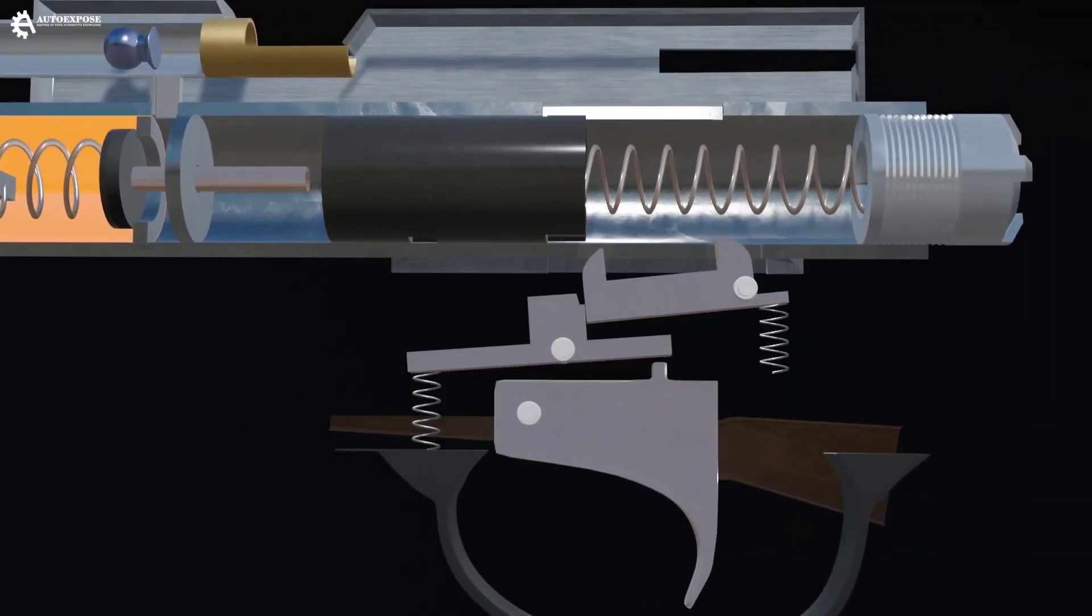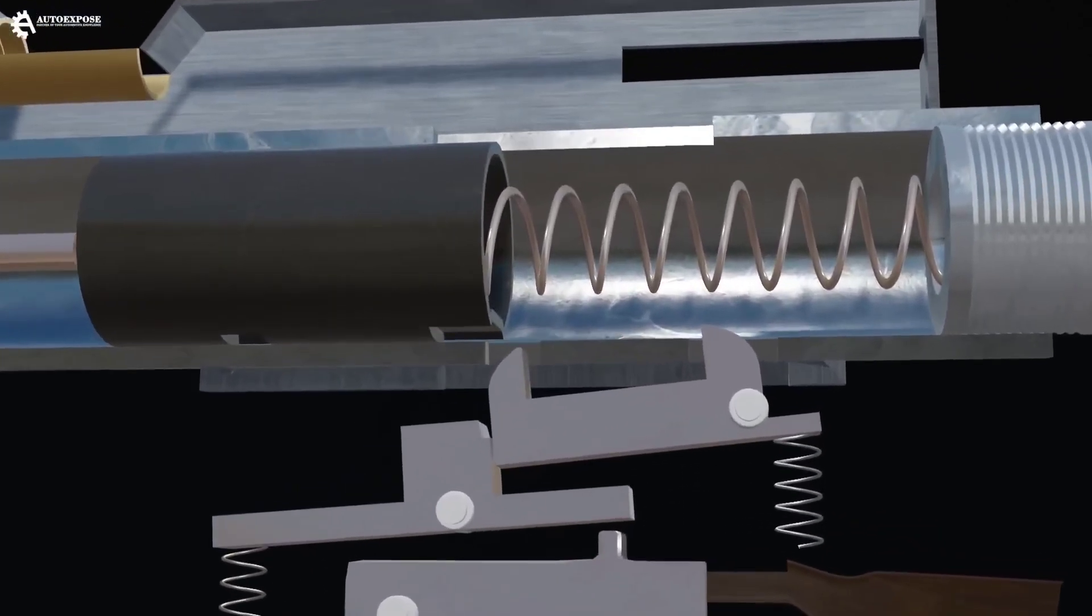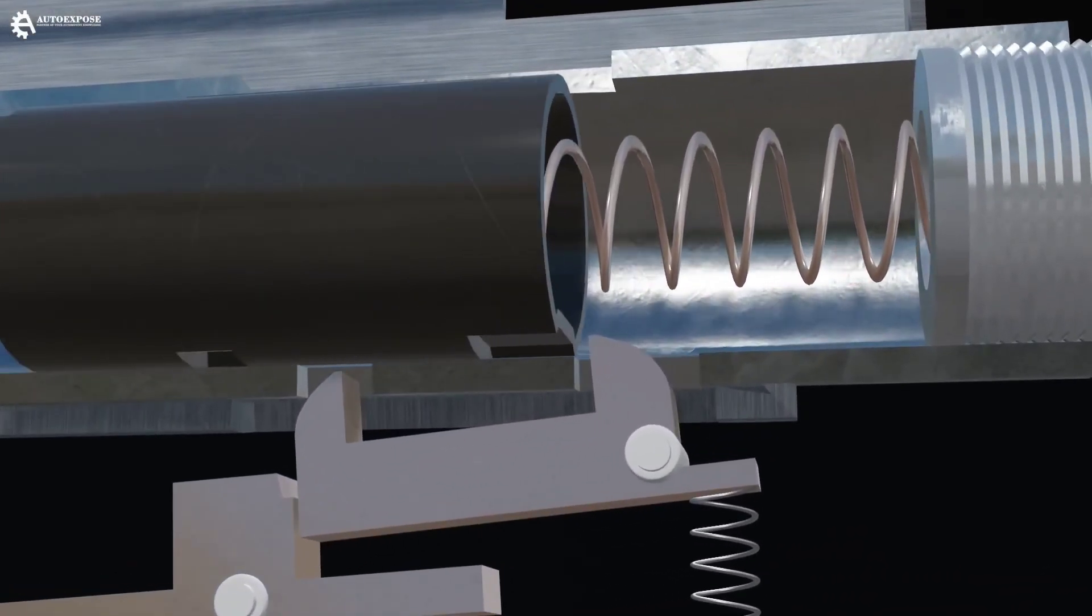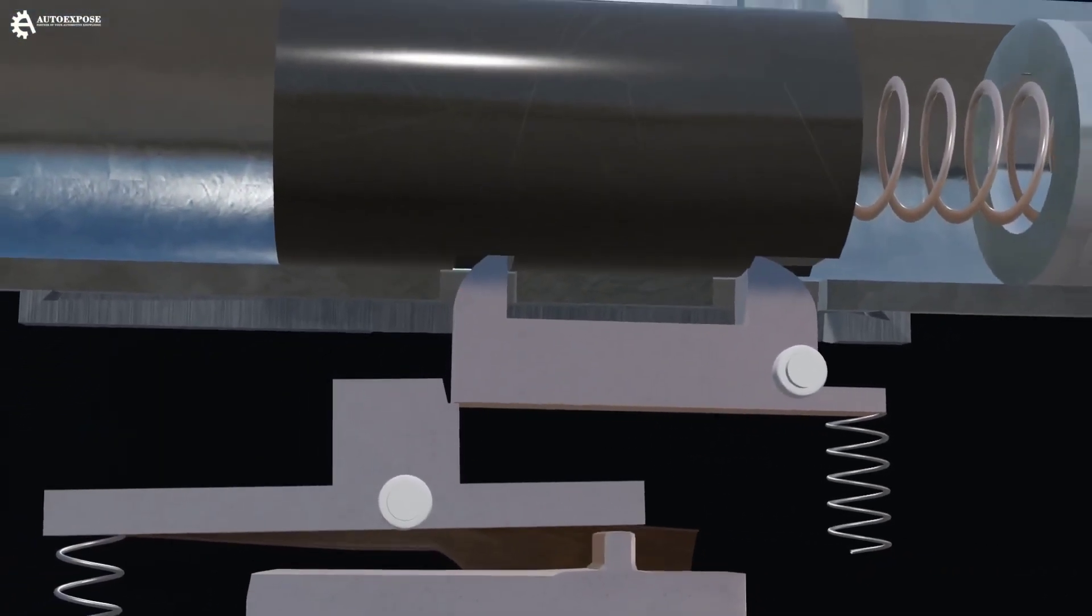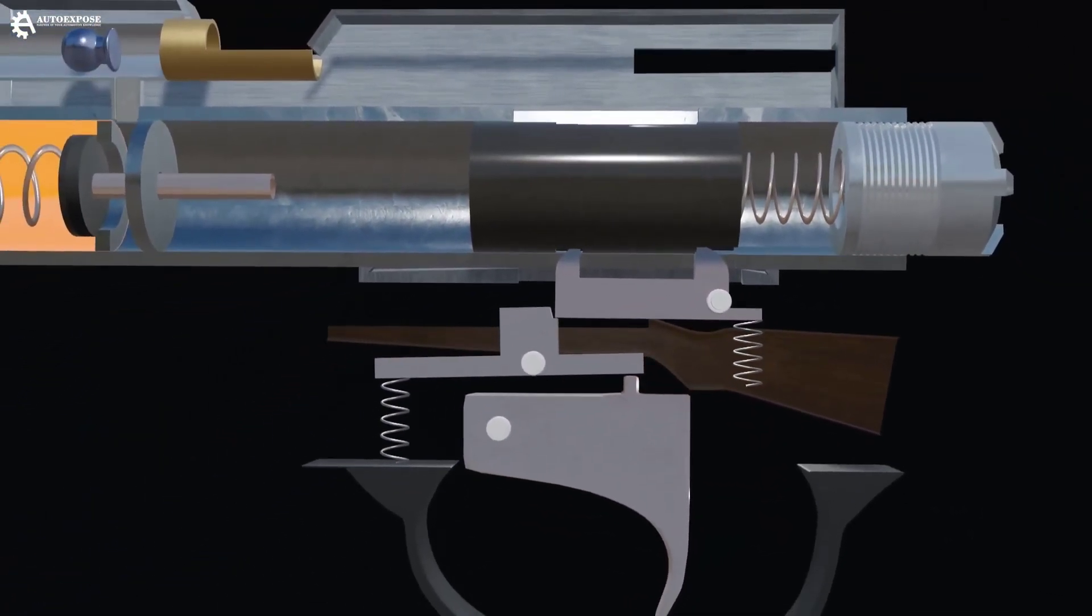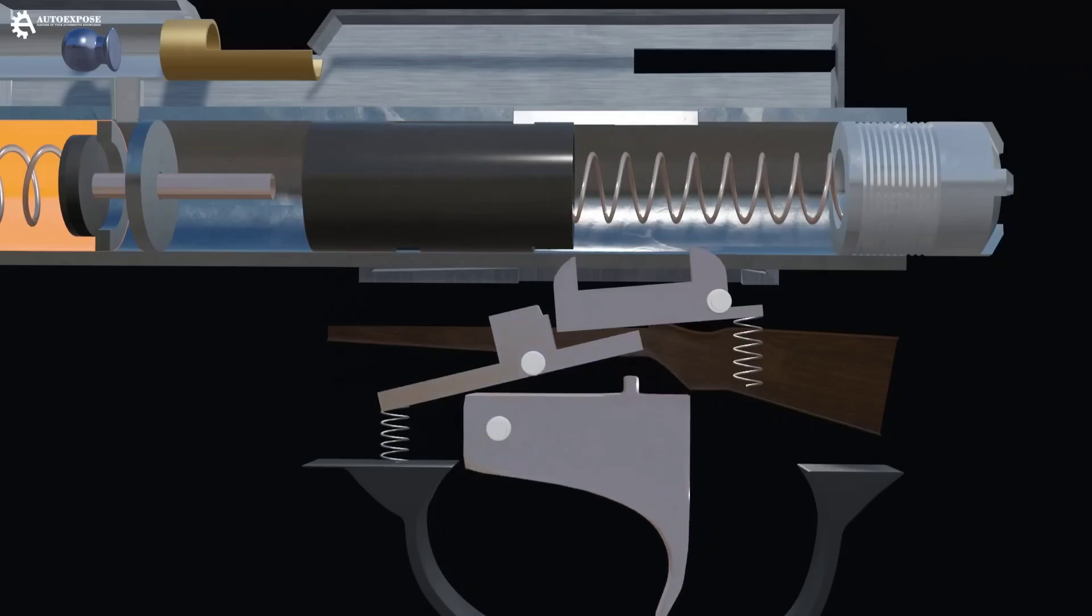This mechanism consists of three components. The top plate has two hooks. When the piston hammer is pulled back, this hook will lock the piston hammer so that its position is held behind. When we pull the trigger, the top plate will move down, releasing the hook so that the piston hammer can be pushed forward and press the valve.